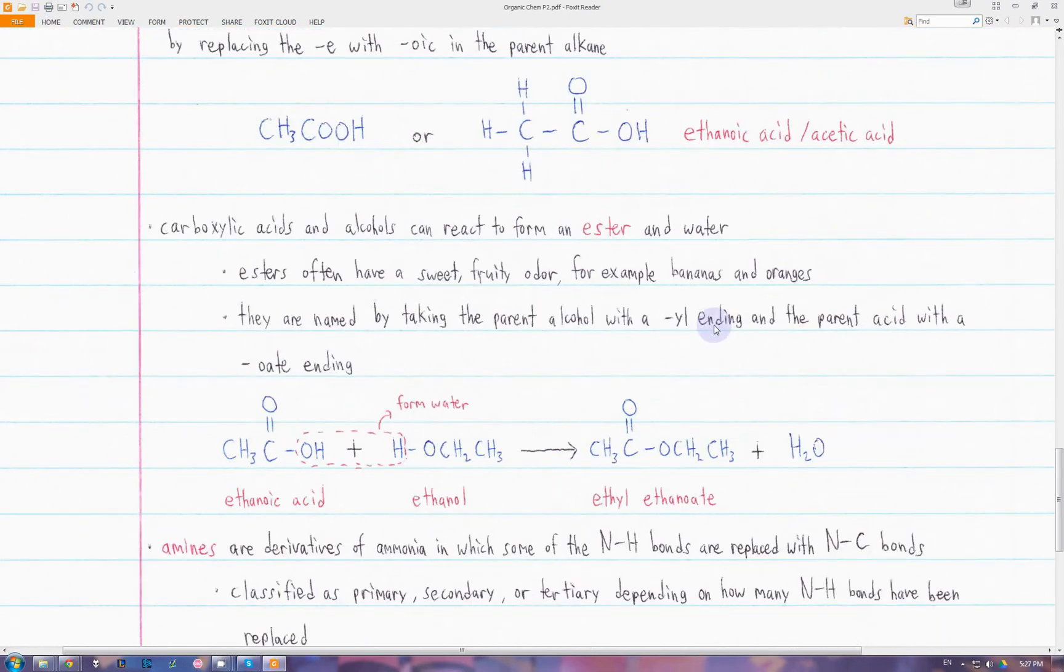The next class of compounds is the ester. Esters are formed in a reaction with a carboxylic acid and an alcohol. We name esters by taking the parent alcohol and attaching YL to its ending, and then the parent acid with an OATE ending. For example, here we have ethanoic acid reacting with ethanol to produce this ester, ethyl ethanoate. We get ethyl from the ethanol, the parent alcohol, removing this ending and attaching YL, and then ethanoate from ethanoic acid, removing this ending and attaching OATE.